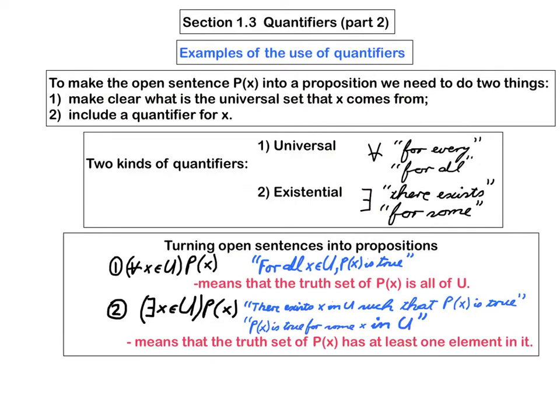Now, in order to turn a given open sentence P(x) into a proposition, we have two ways that we can accomplish that. Each of the ways involves writing before you write the P(x), you write this or this. This one is read for all x in U, P(x) is true. And the meaning of that is that the truth set of P(x) is all of U. In other words, P(x) is true for every single x in U.